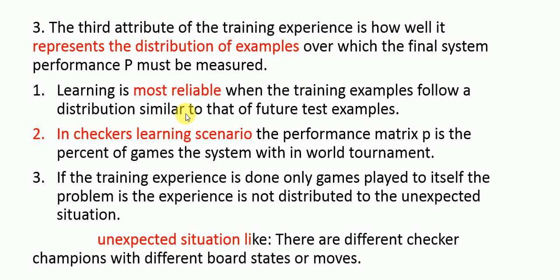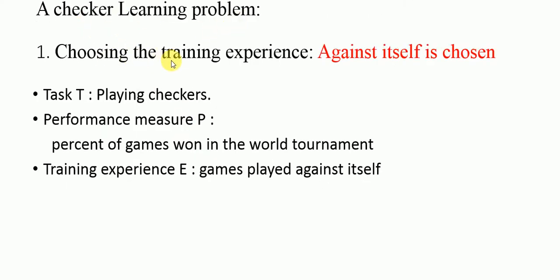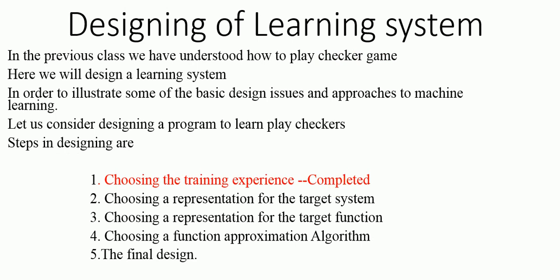Now, for the checker learning program, the chosen training experience is playing against itself. So the performance measure P is the percent of games won in the world tournament, and training experience E is games played against itself. The first part — choosing the training experience — is now complete. In the next class, we will cover choosing the representation of the target system.